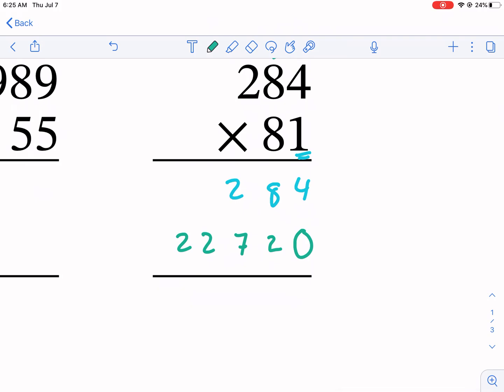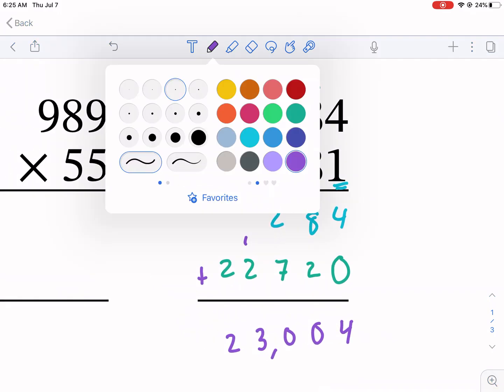But if we move this over, we're going to get a much bigger answer, and that's what it should be - it should be a big answer. So now we're going to add these together. So we got 4 plus 0 is 4, then we get 10, carry, then we got another 10, carry, 3, and then 2. So 23,004 should be our answer, not about 2500.